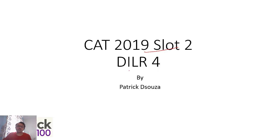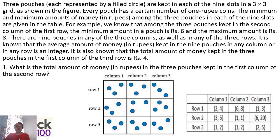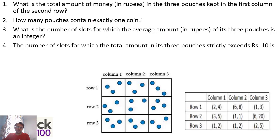We are looking at slot two, fourth set of DLR. Let's look at how to solve. Try to solve on your own and then look at the solutions. You can pause the video and then solve. The first question is here, and the remaining four are database questions. Pause, try to solve, move back and forth — see the question and then look at the solutions.